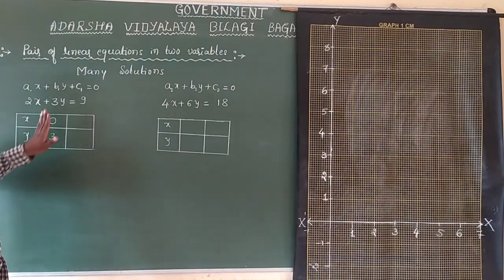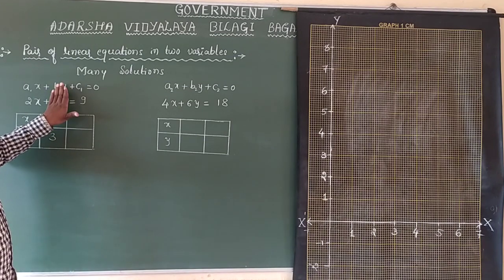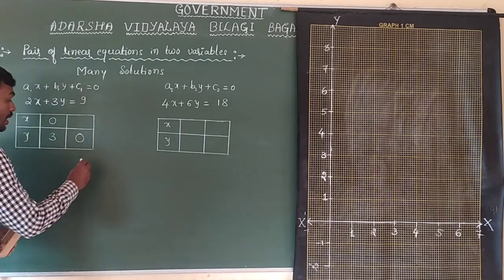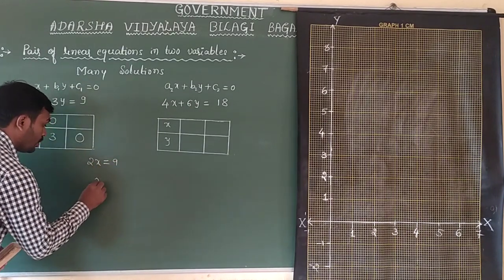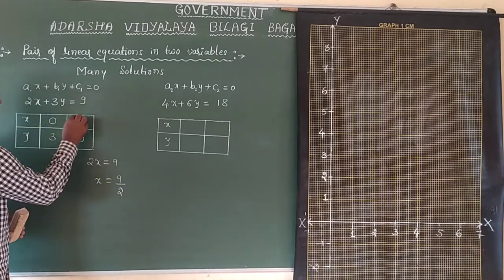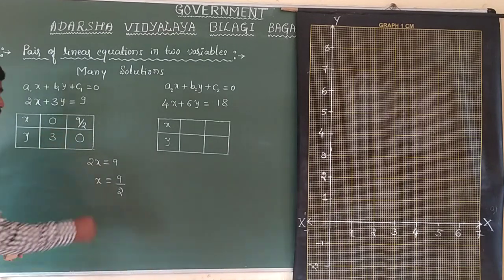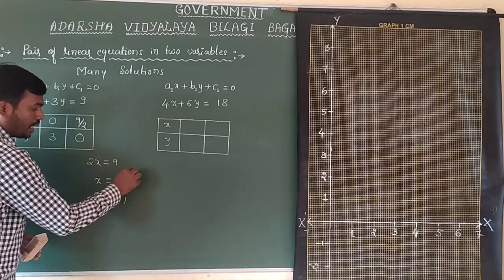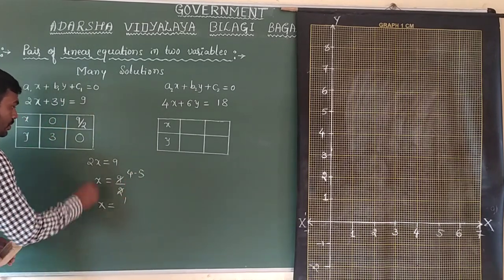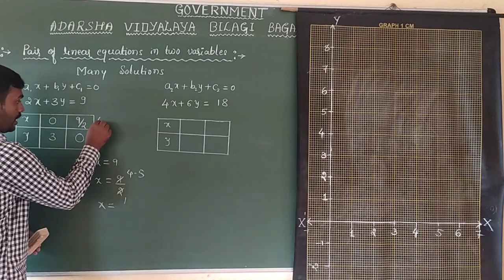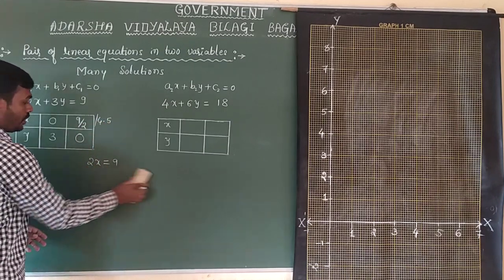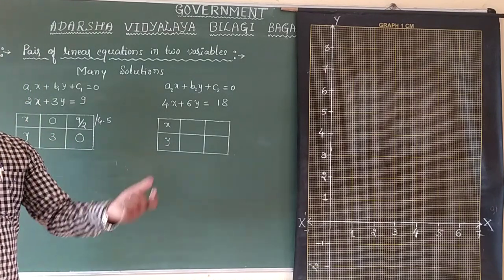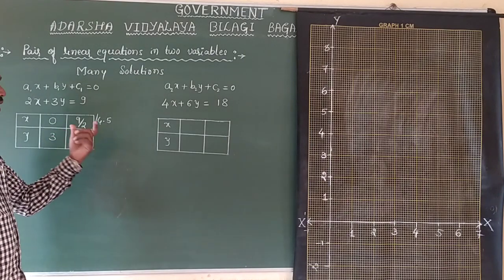Now I will hide y. Y invisible means it becomes 0. What is left is 2x equals 9, so x equals 9 by 2, which is 4.5. When y is 0, x is 4.5. Only two values are taken because we need two points to draw a line — one starting point and one end point. First equation calculation is over.